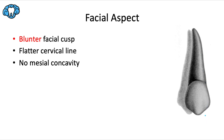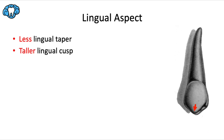For a similarity, the mesial cusp ridge is perhaps slightly longer than the distal cusp ridge, which is the same as we saw with the first premolar. For the lingual aspect, there's not as much lingual taper or convergence toward the lingual aspect that we're used to seeing from basically all the other teeth. That lingual surface is just about as blocky as the facial surface.